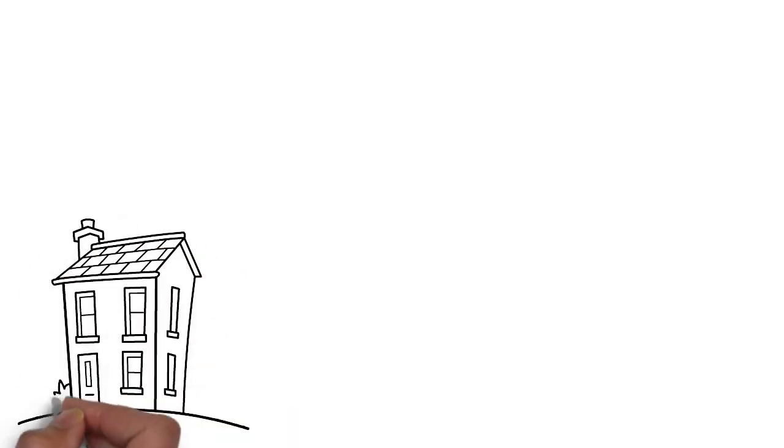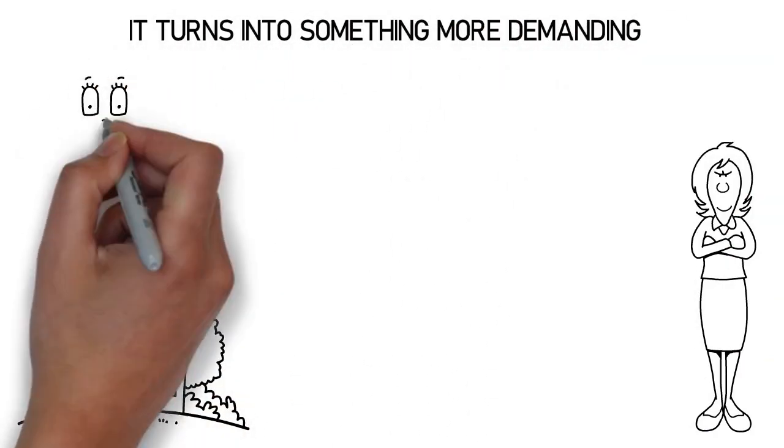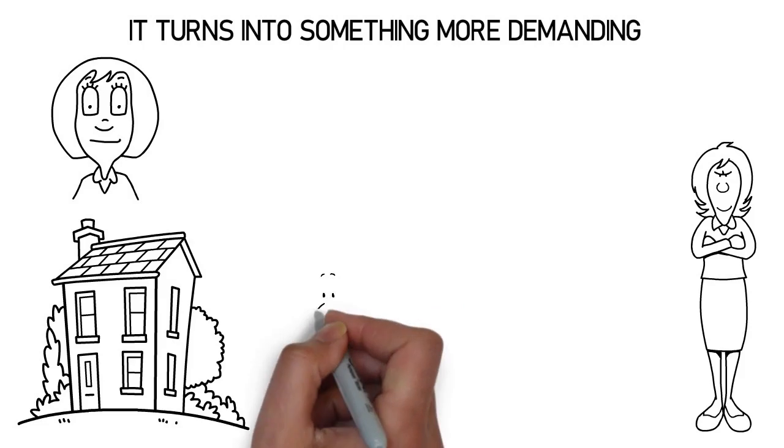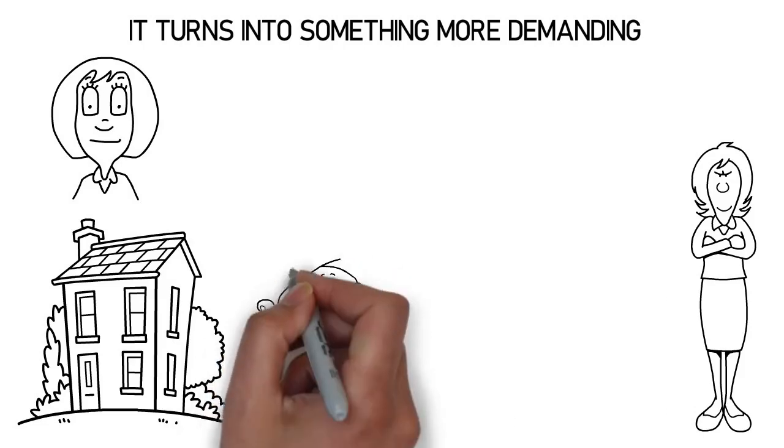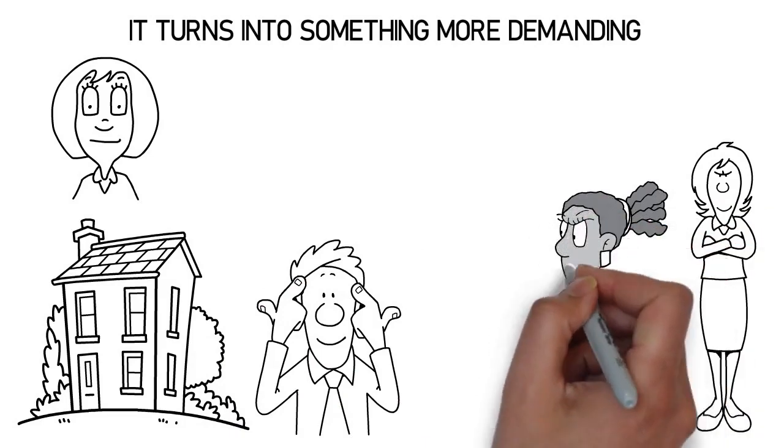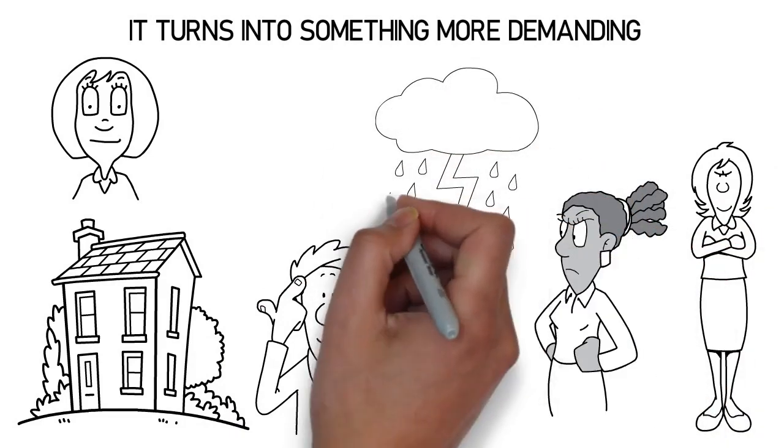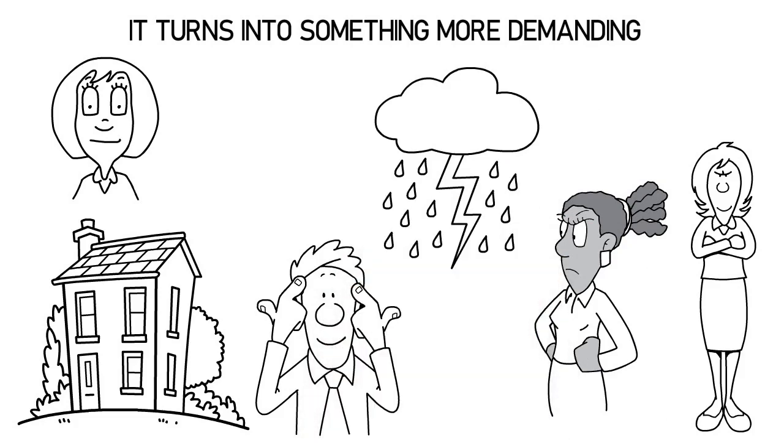At home, things can get pretty tense. That need for admiration doesn't just vanish. Instead, it turns into something more demanding, more intense. It's like she's still performing, but the role has changed. Now, it's less about making everyone laugh, and more about making sure she's still in control. Still the one calling the shots. And if things don't go her way, well, that's when the storm clouds roll in.